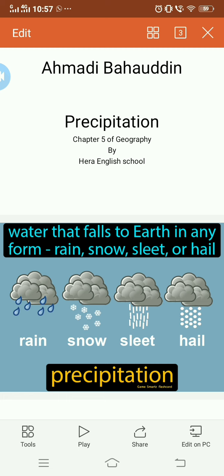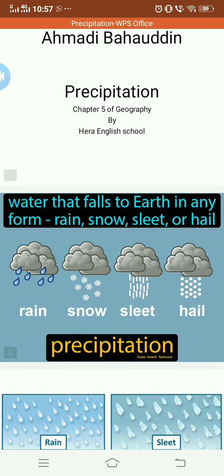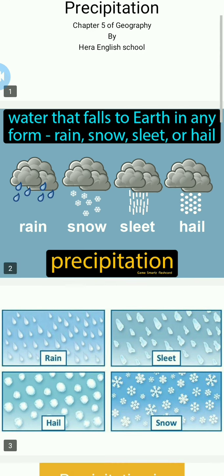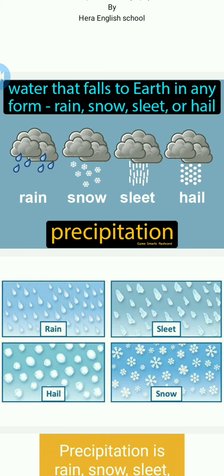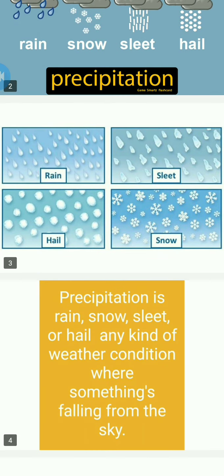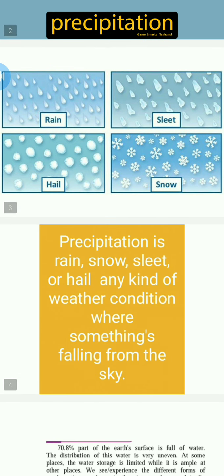What is precipitation? Water droplets form from clouds, or when water droplets get heavy and fall from clouds in different forms. Whether it is rain, snow, sleet, or hail — that is called precipitation. Any kind of weather condition where something is falling from the sky is called precipitation.